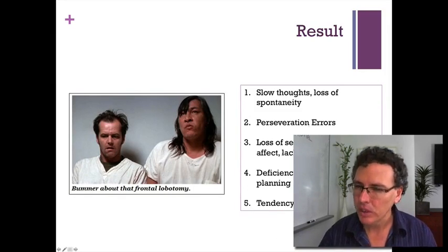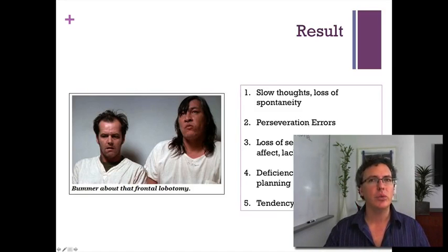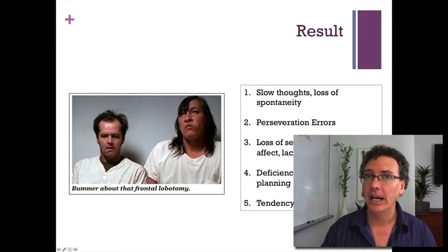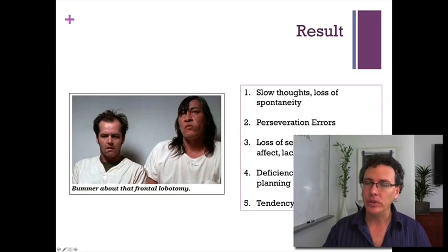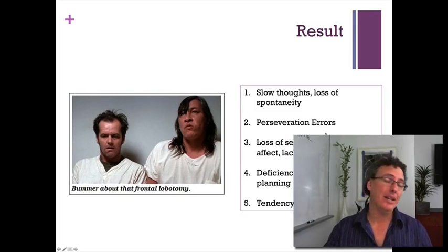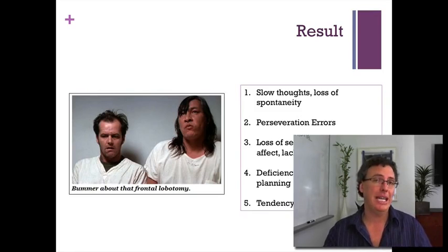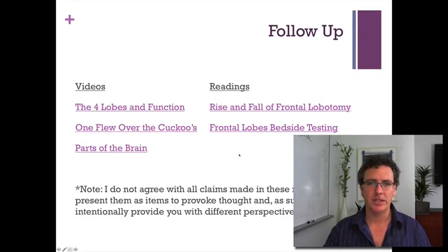The frontal lobotomy gives us a really good picture of the complex things the frontal lobes are doing. A lot of this has to do with how to appropriately behave and get what you want in the future — that seems to be what the frontal lobe is all about: what's the right way to act, linked to the motor cortex to actually put those plans into action.